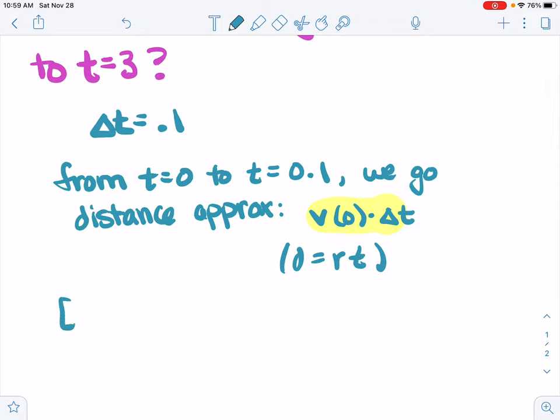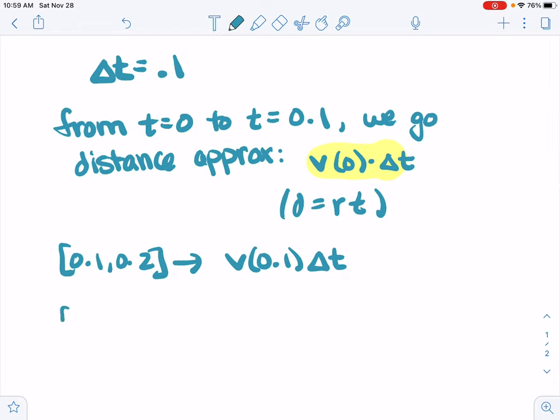From the next interval, from 0.1 to 0.2, we go about the velocity at 0.1 times delta t. And then from 0.2 to 0.3, the distance we travel is, we'll use the velocity at 0.2.